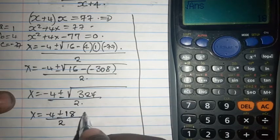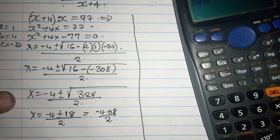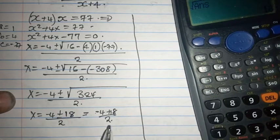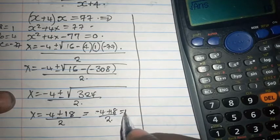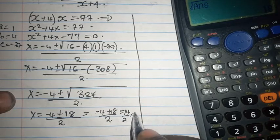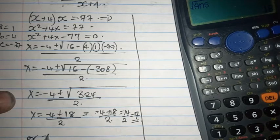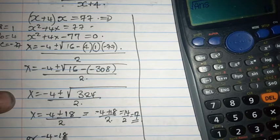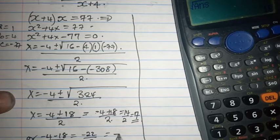This gives us minus 4 plus 18 over 2. Please remember I said the division is the very last step. So this is 14 over 2 giving us 7. Or minus 4 minus 18 over 2 which is minus 22 over 2 which is negative 11.